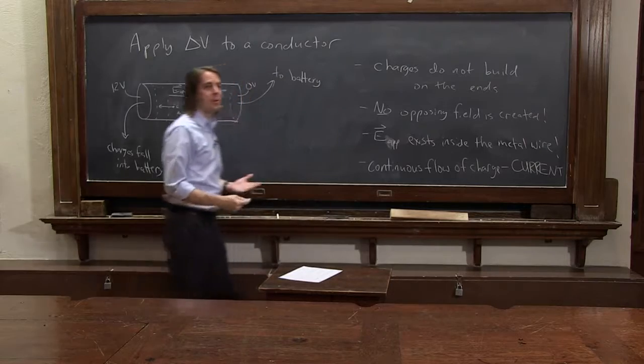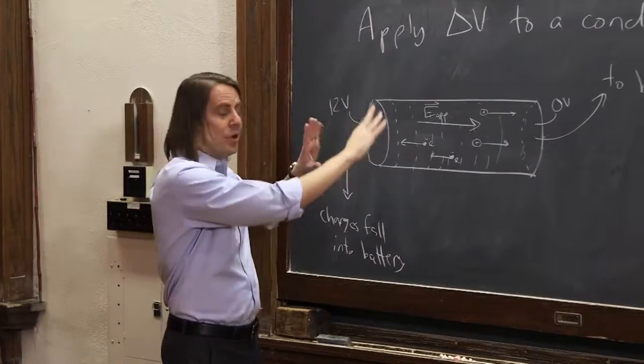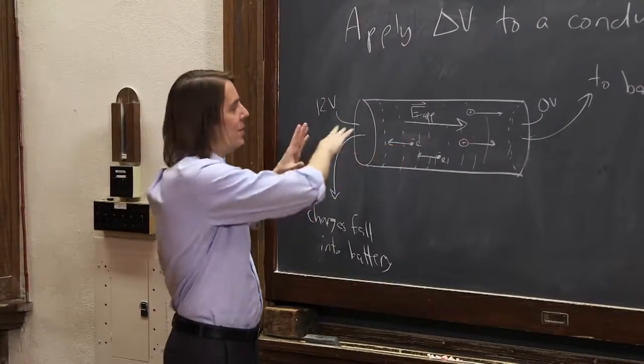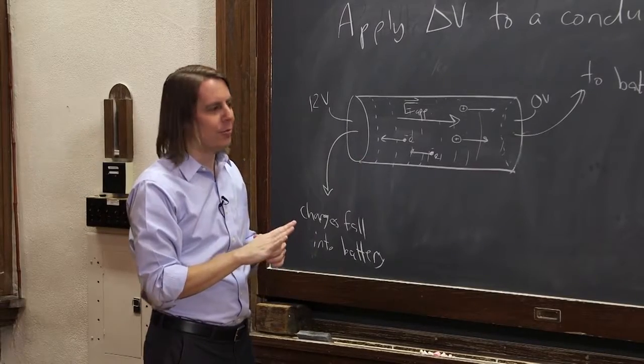Current is a continuous flow of charge when you're not in electrostatic equilibrium. That's the reason this is different - we're not in equilibrium here. That's why you can have an electric field, you can have a potential drop, and the result is that current flows.